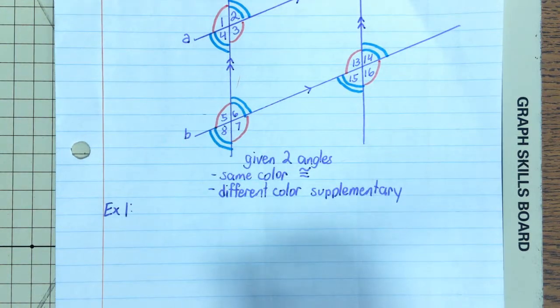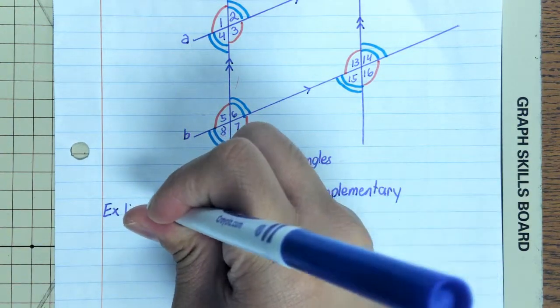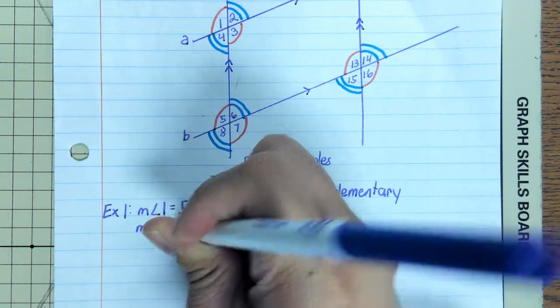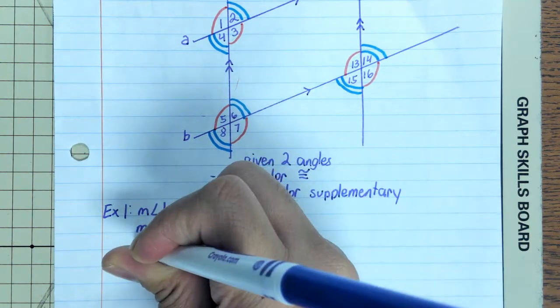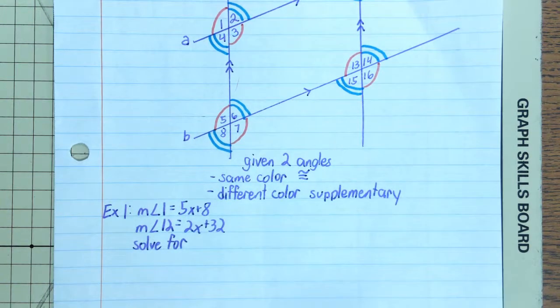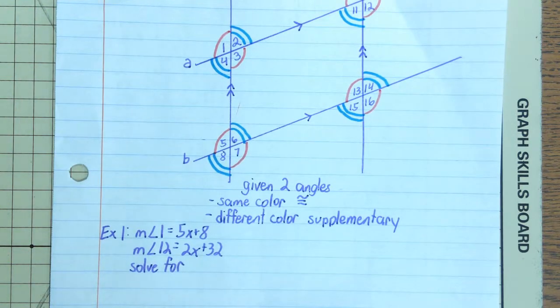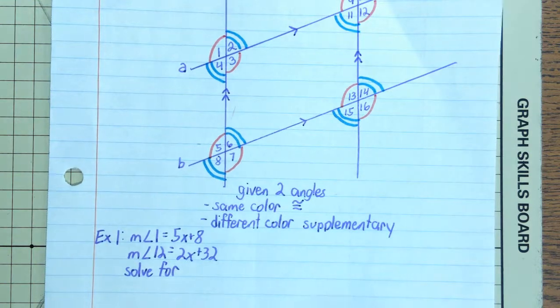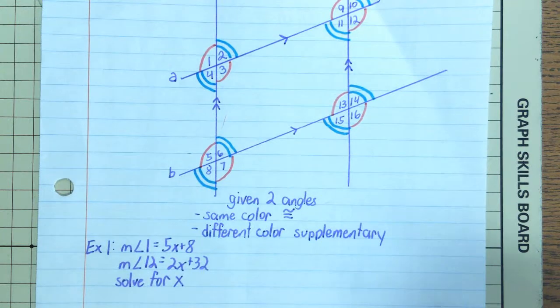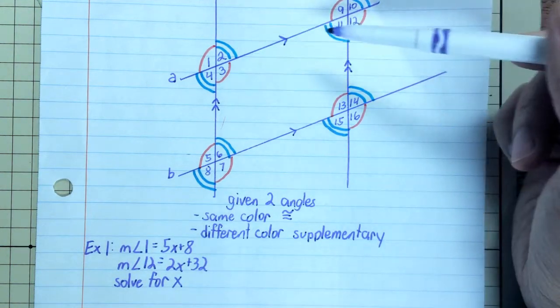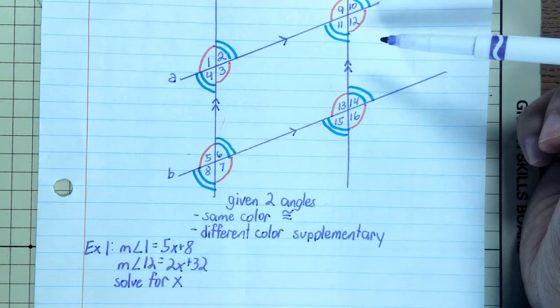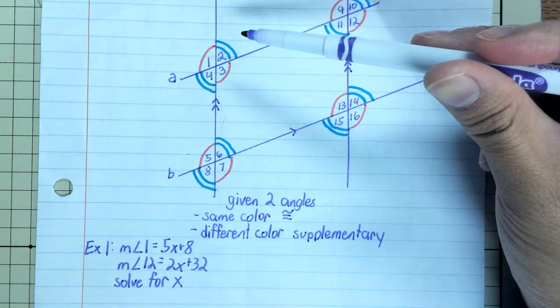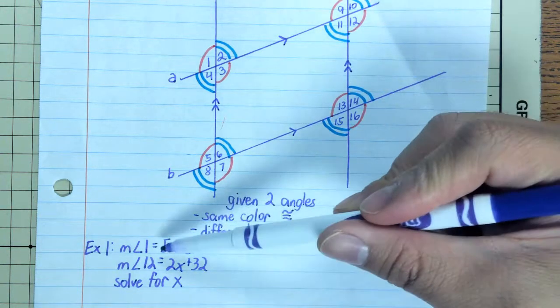Example one: let's say you're given an equation or expression such that measure of angle one equals 5x plus 8, and measure of angle 12 equals 2x plus 32. And the direction says solve for x. Just like when we were working with angles, we can be asked to find the equation, solve for x, and plug in x to find my answer. So in this case, all we're asking for is to solve for x.